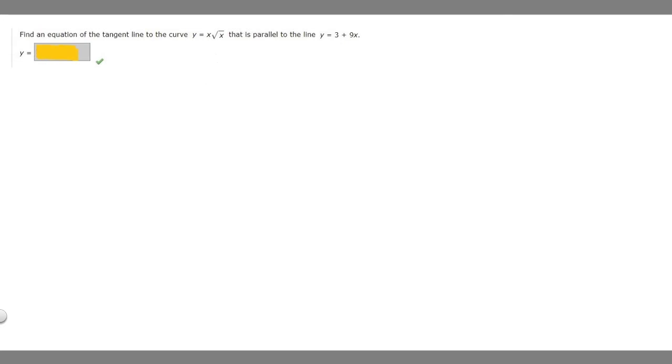The first thing that we're going to want to do is take the derivative of our function, set it equal to 9 so we can find our x value. So the derivative with respect to x of x times the square root of x is equal to 9 because that's the slope of our parallel line.